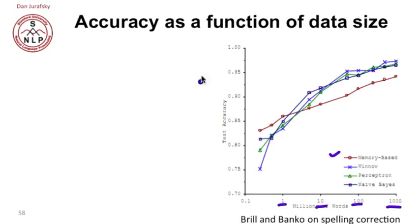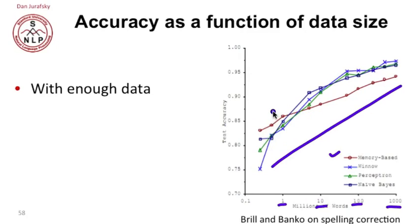We're measuring how accurate the classifiers are. You can see that the difference between the classifiers is much smaller than the difference you get by just adding more data. Depending on how much data you have, the classifiers cross over in their performance curve. So with enough data, it may not matter what classifier you have.